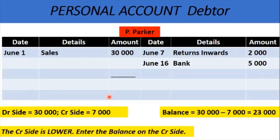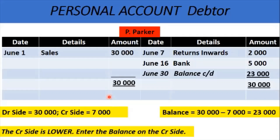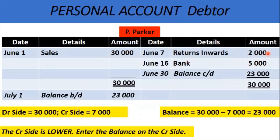We will enter the 23,000 on the lower credit side, putting in balance carried down. When we total the accounts, we get 30,000 on both sides. We bring down the balance into July. In July, we are interested in the 23,000 — not the full 30,000 — because he has paid us 5,000 and returned 2,000 worth of goods. So we can only bring 23,000 into the next month.